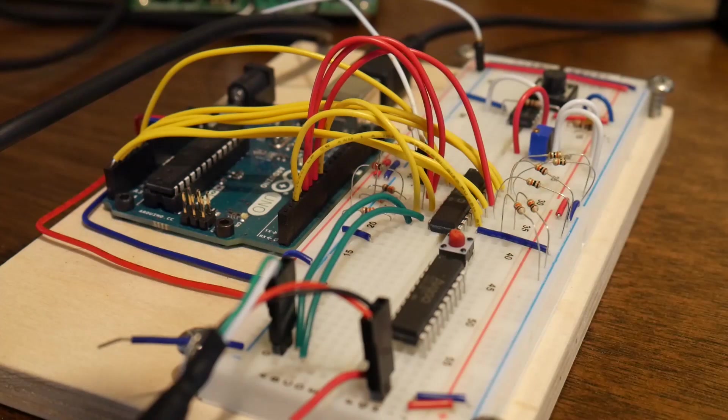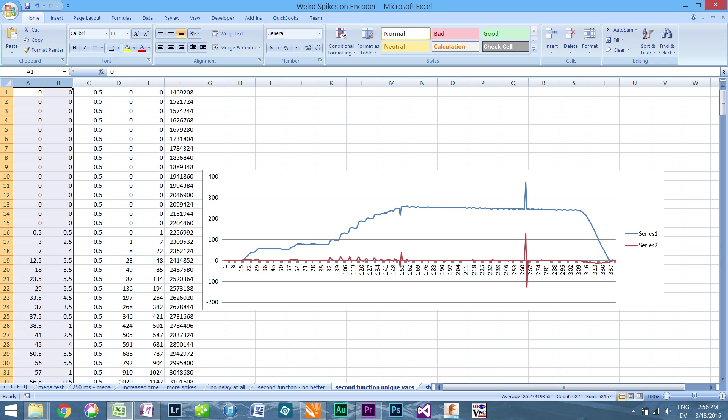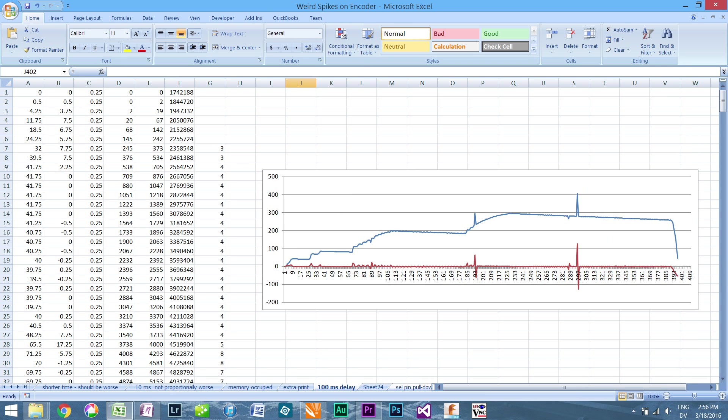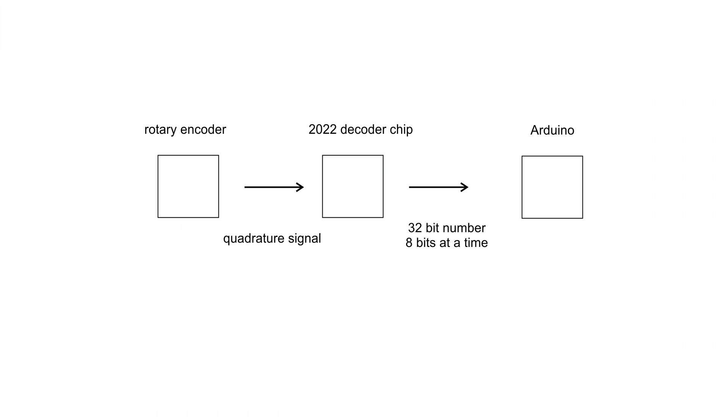In the last video, I was having some trouble reading out of these decoder chips and getting weird spikes in the data. So rather than going through all the different things that I tried, let's just review real quickly what's going on. There's a rotary encoder which feeds a quadrature signal into the decoder chip, and that has a 32-bit counter which counts those quadrature signals.